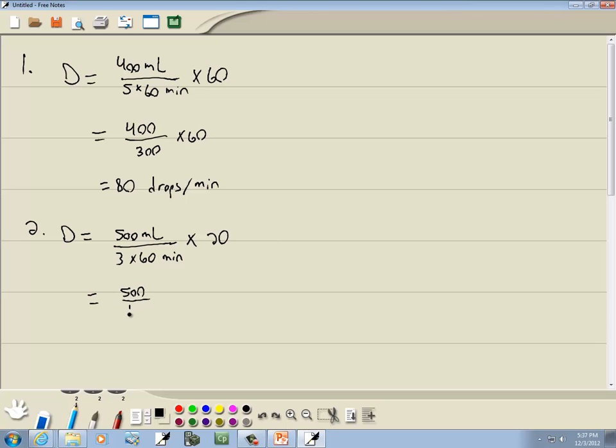So we're going to have 500 divided by 180 times 20, stripping out all the units. 500 divided by 180 times 20, and I'll go ahead and round this, so 56 drops per minute. There we go.